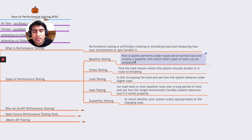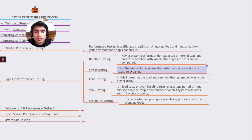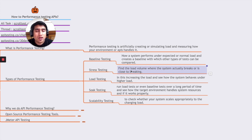Stress testing is about finding the volume where the system actually breaks. For example, if our server can handle a thousand requests per second and we send two thousand, it will break. We want to do stress testing to see at what point it starts to break — whether it's at 1200, 1500, or 2000 requests per second.